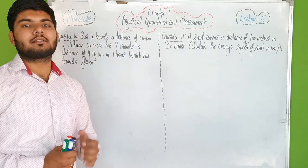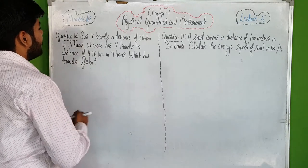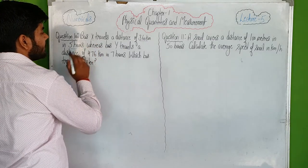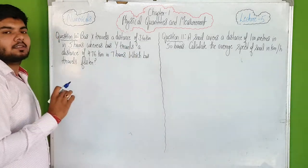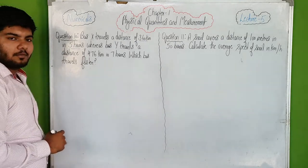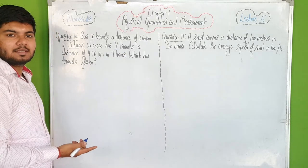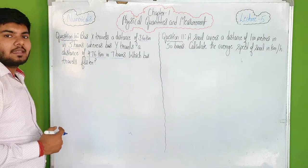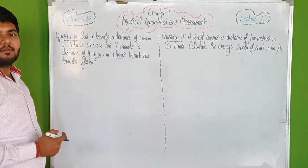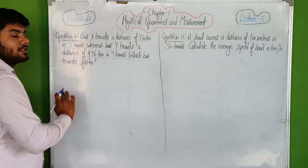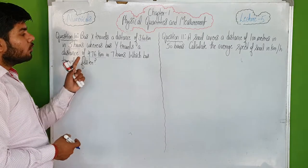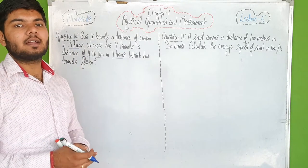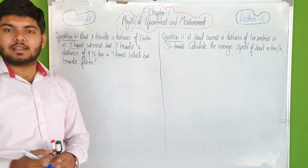Moving on to numerical number 10. A bus X travels a distance of 360 kilometers in five hours. Bus Y travels a distance of 476 kilometers in seven hours. We need to find which bus travels faster.